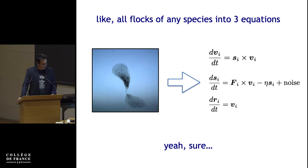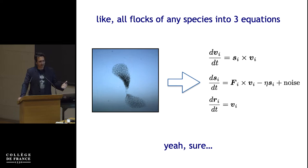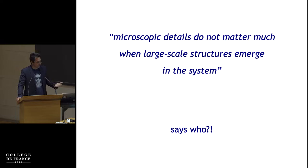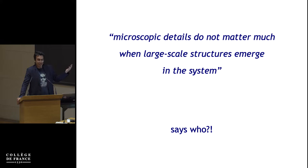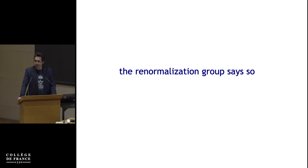I will claim I can describe every flock of every species, and also swarms, insects, and so on, with just those three equations. This is the kind of misbehavior which creates a chasm with other communities. When I work with biologists, they say: okay, sure — you forget all the complexity of the system, the great diversity, heterogeneities, there are males and females and young and old birds. So, if you read our papers, sooner or later you'll find sentences like: "Microscopic details do not matter much when large-scale structures emerge in the system." The problem is: says who? This would be nice if true, but who's going to tell you that?